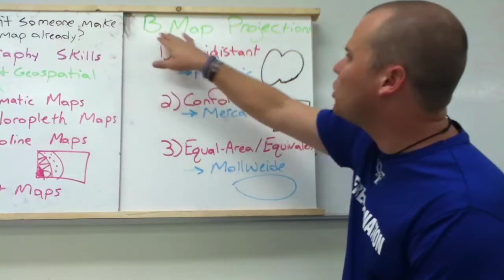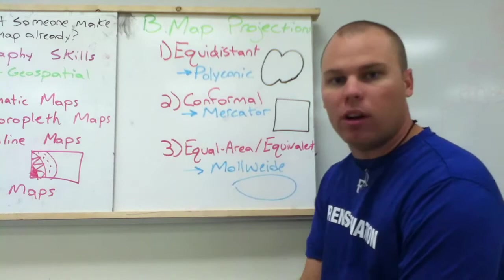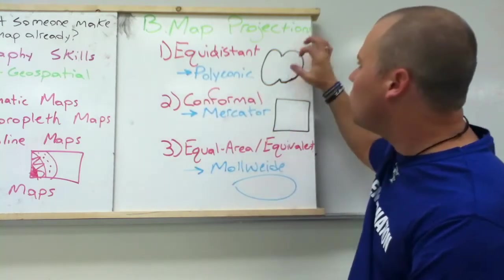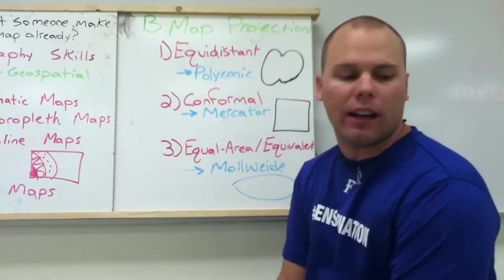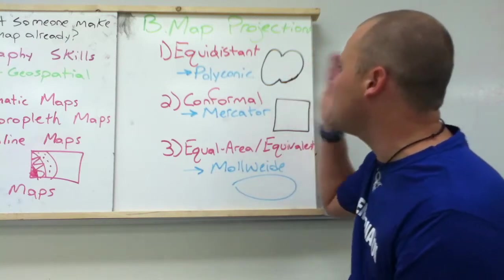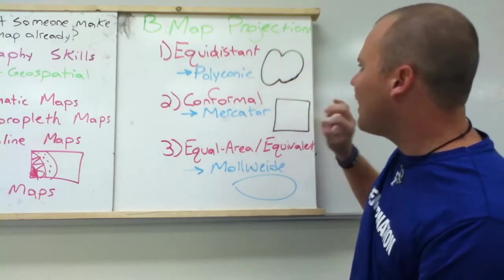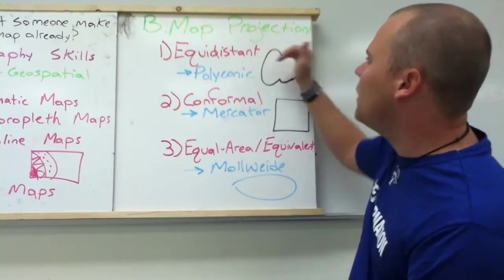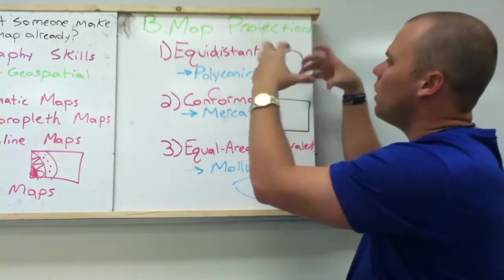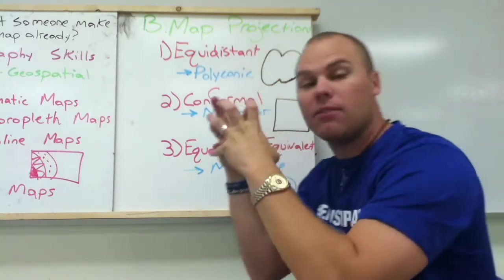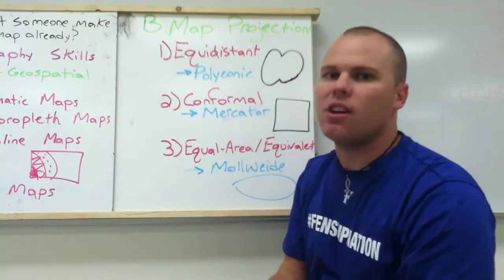Next we've got map projections. The first type is the equidistant projection — the example used is the polyconic. What this means is it gives you the most accurate representation of distance and linear distance on a map in one direction. So north and south will be almost exact, but when you start looking east and west, it becomes distorted. You've got the earth as a sphere lined out into two halves, giving you a good picture of one direction distance but less accurate in others.